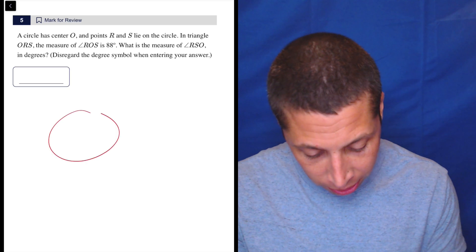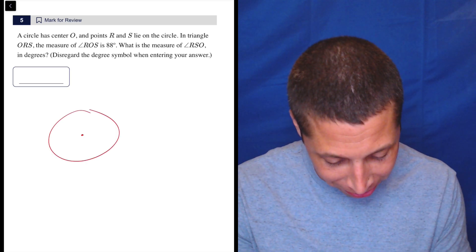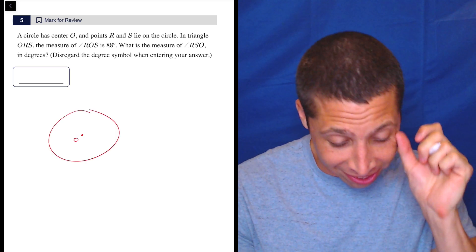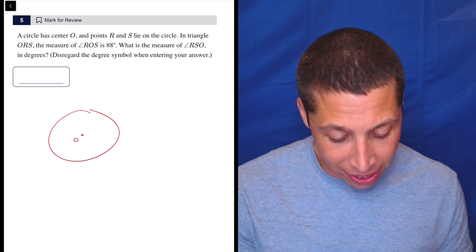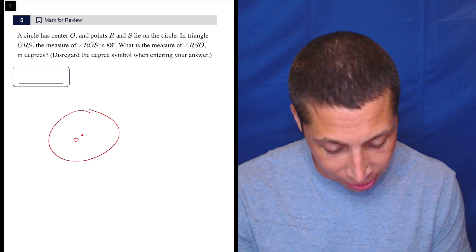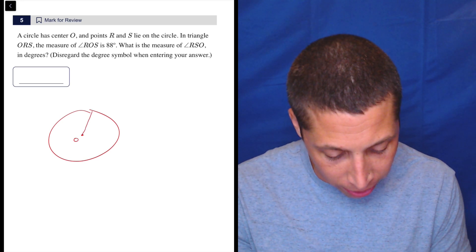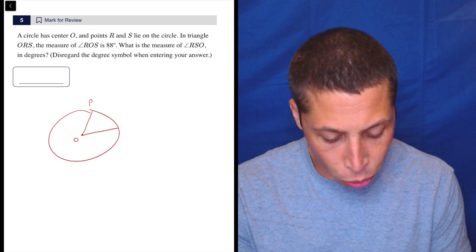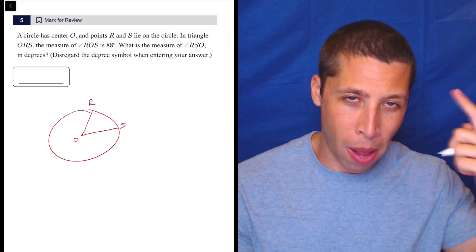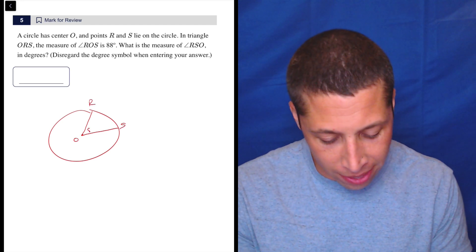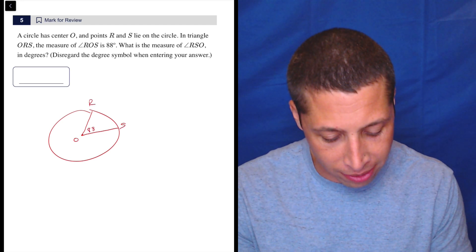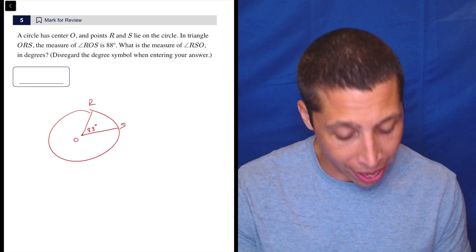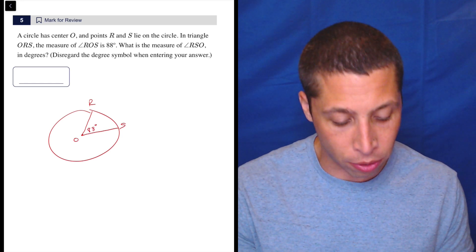So we have a circle with center O. I'm going to try my best to draw a very bad circle. And points R and S lie on the circle. The angle ROS is 88 degrees. It's going to kind of look like a 90 degree angle. I'm going to purposely draw it shorter because I don't want my brain to think it's 90 degrees, because then I might start making assumptions about things that I shouldn't. But there you go. ROS is 88 degrees.